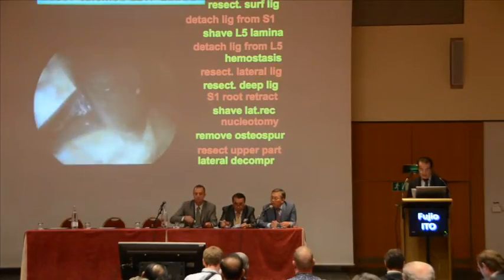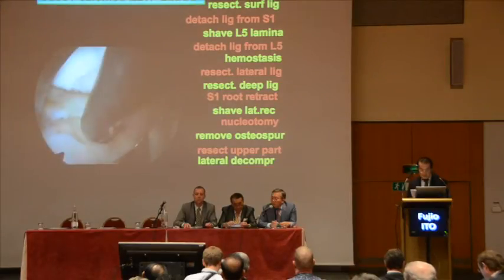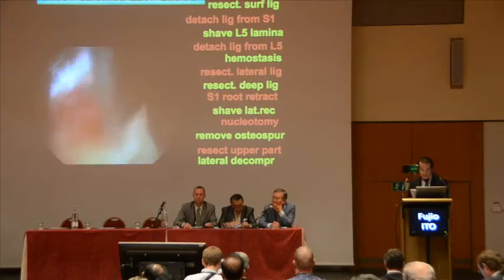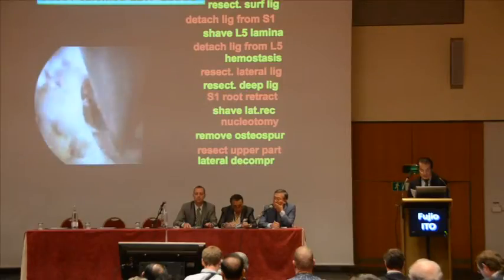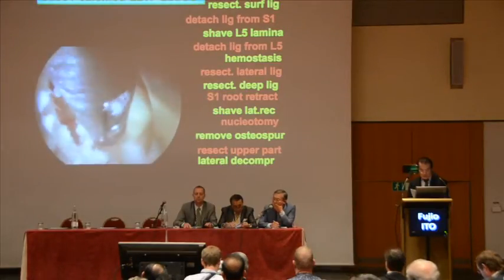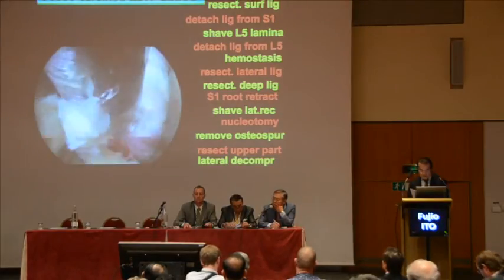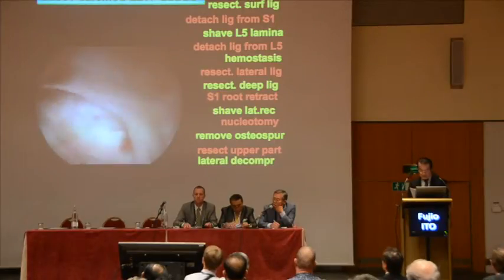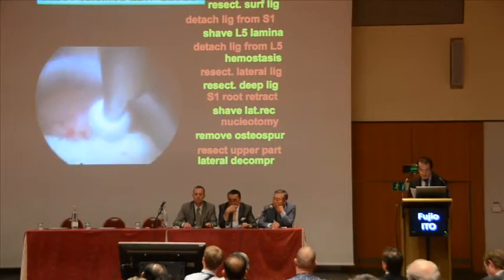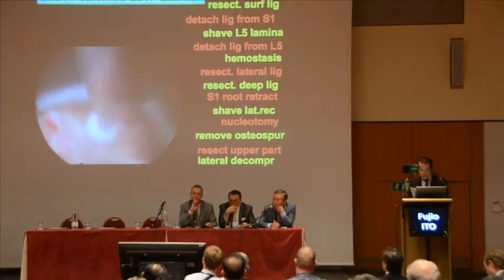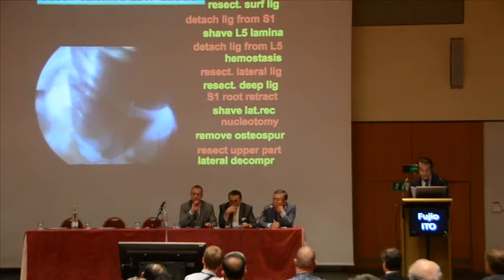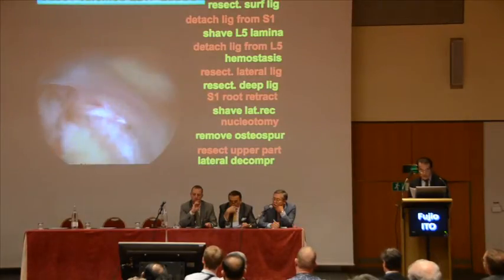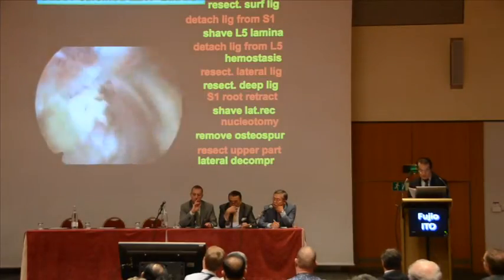Case 1 is calcified LDH and lateral recess stenosis. First, drill the S1 lamina. Next, resect the yellow ligament surface layer using a punch. Then detach the S1 laminar ligament using a curette. Conversely, shave the upper L5 lamina and detach the ligament. Bleeding must be stopped using a radiofrequency electrode. The yellow ligament along the lateral recess must be resected using a curette. Then detach the yellow ligament deep layer using punch forceps. The oblique cannula is suitable for retracting the S1 root. The lateral recess osteophyte must be shaved using a diamond burr. From the S1 root space, you can remove the protruded nucleus using forceps, while the osteophyte must be removed using a diamond burr. If required, the upper portion may need to be decompressed. As a result, the spinal root should be completely decompressed at the lateral portion.